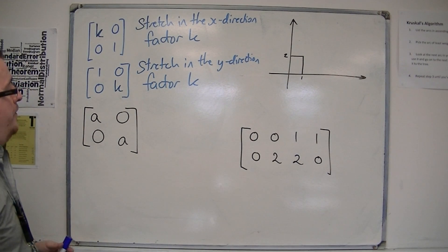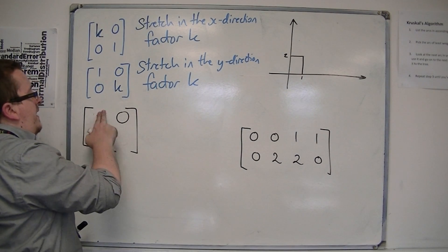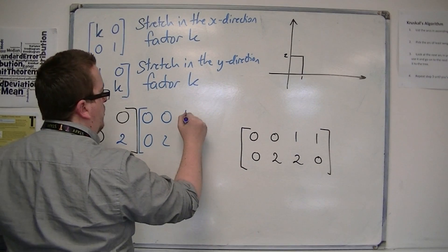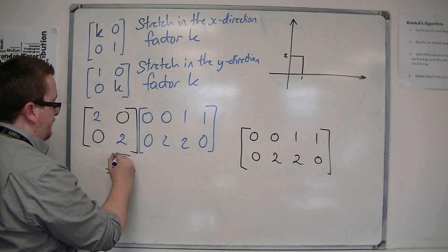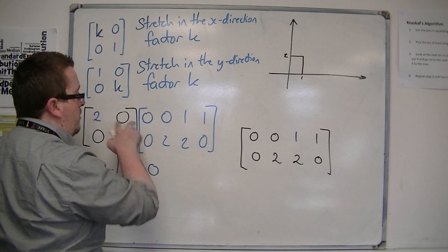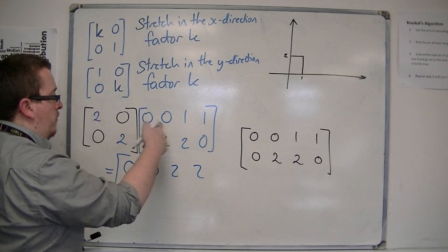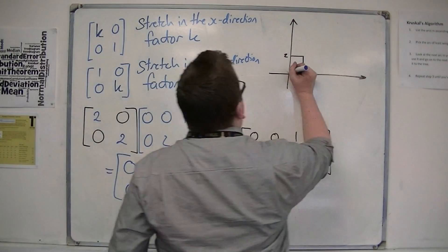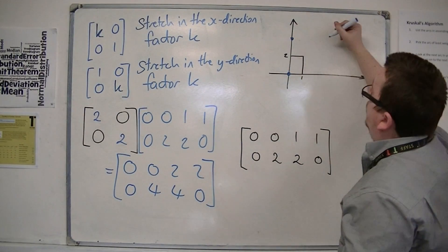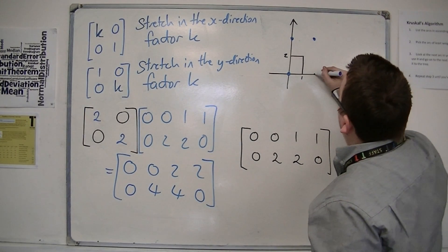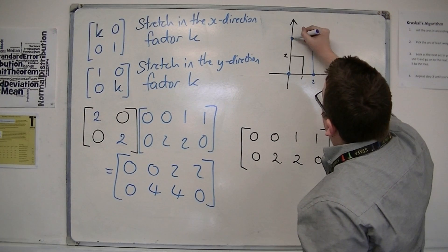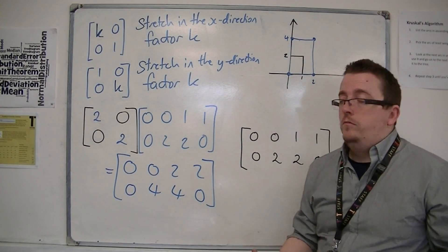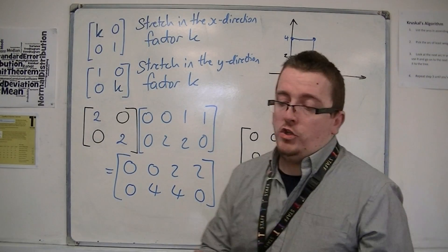If I replace A with 2 and multiply our rectangle matrix — columns (0,0), (0,2), (1,2), (1,0) — by [2,0;0,2], I get (0,0), (0,4), (2,4), and (2,0). So the rectangle has been enlarged — stretched in both the x and y directions simultaneously.